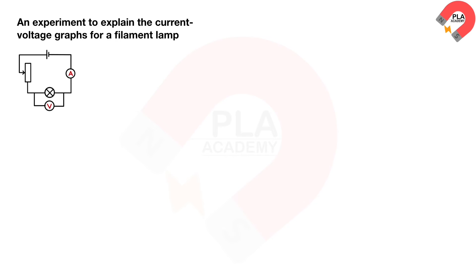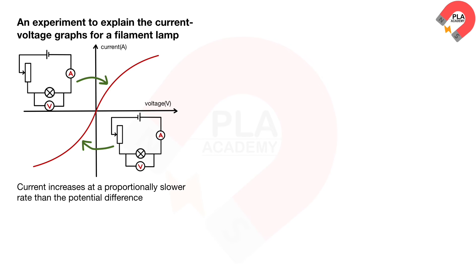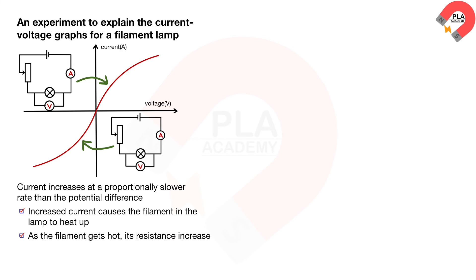An experiment to explain the current-voltage graphs for a filament lamp. Set up the apparatus as shown on the diagram. Adjust the variable resistor to obtain different values of current. Read the voltage, or PD, at the voltmeter and the current at the ammeter. Repeat the experiment 10 times to get 10 sets of values of V and I. Reverse the cell as shown on the diagram, and repeat the experiment 10 times. Plot the graph of current against voltage. From the graph, the current increases at a proportionally slower rate than the potential difference. This is because the increased current causes the filament in the lamp to heat up. As the filament gets hot, its resistance increases, opposing the current and causing it to increase at a slower rate.